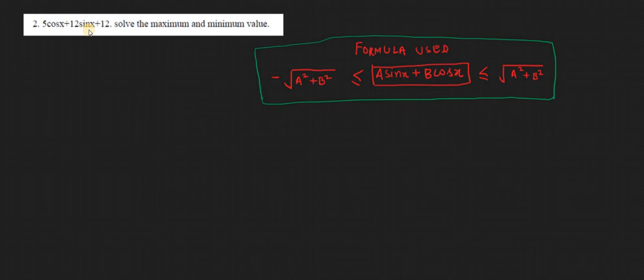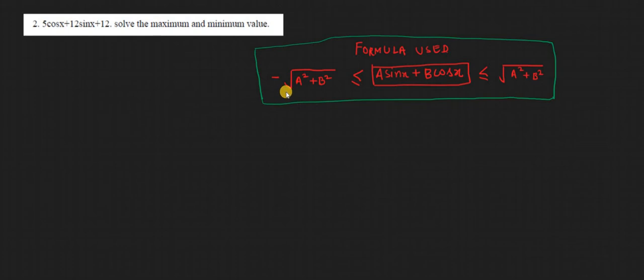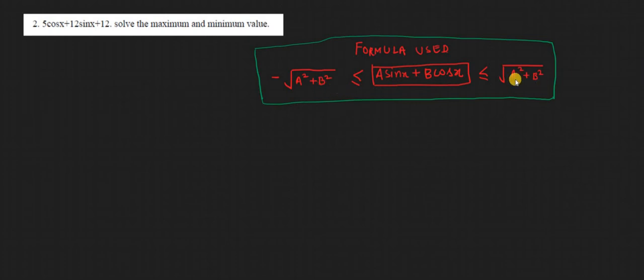For the first method, it would be very easy — we'll use the direct formula. The direct formula for the maximum and minimum value of asin(x) + bcos(x) is: the value lies between minus √(a² + b²) and plus √(a² + b²).